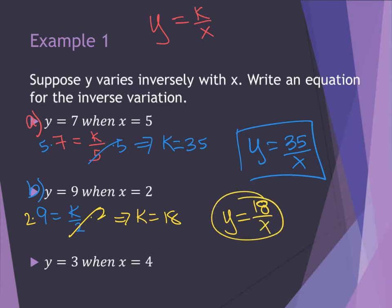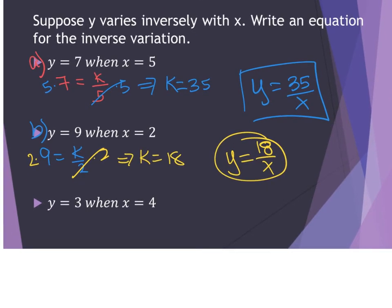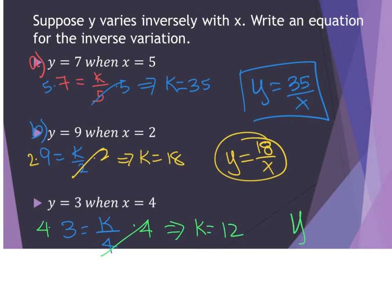For my last equation here, I'm told that y is equal to 3, and my x is 4. I want to solve, so I'm going to multiply both sides by 4. This gives me k equals 12, so now I have y equals 12 divided by x.